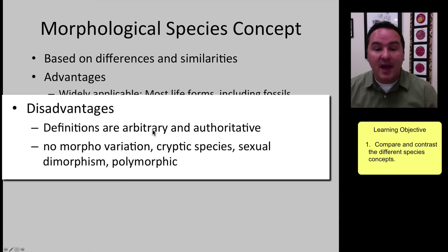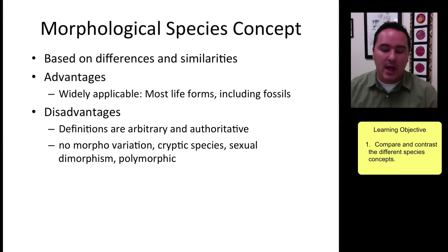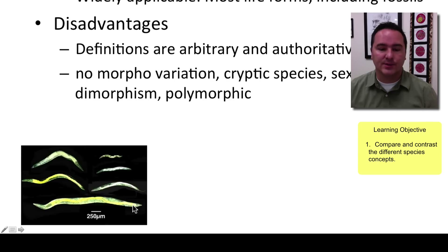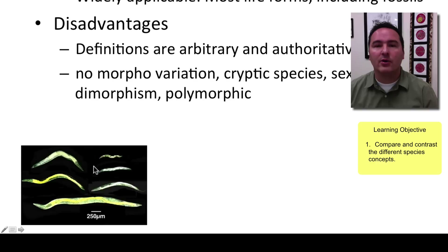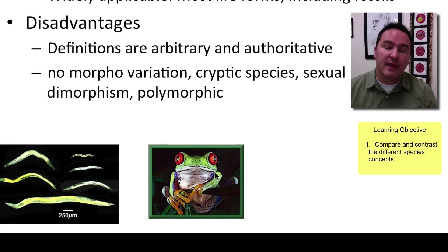However, the morphological species concept has disadvantages. The definitions are always a little arbitrary and authoritative — the expert on mayflies is the person who decides how many species of mayflies there are. For some organisms like nematodes or roundworms, there is simply no morphological variation, so it's hard to distinguish species. Many species are also cryptic, meaning they hide, so you never see their morphology.